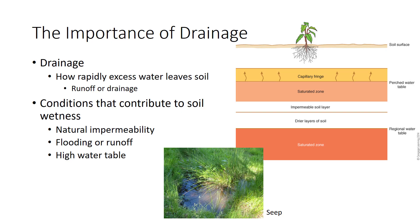Drainage refers to how rapidly excess water leaves soil by runoff or draining through the soil. In a well-drained soil, excess water leaves the root zone quickly enough that roots do not suffer lack of oxygen. Poorly drained or wet soils remain waterlogged long enough to interfere with plant growth. Three conditions contribute to soil wetness.